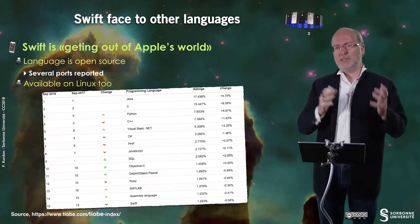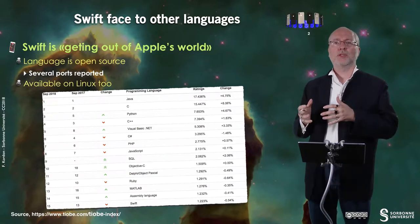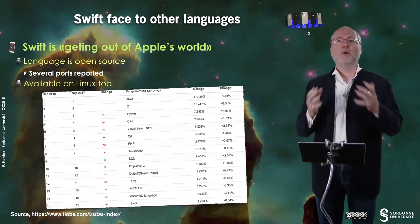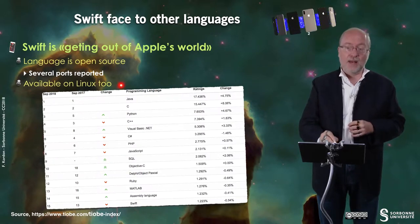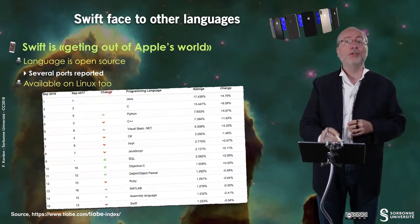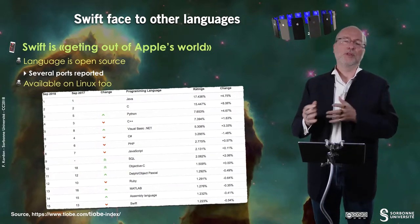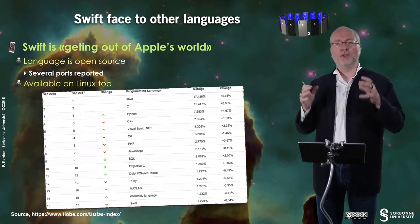But now since the language is open source, several ports have been reported, and at least it's available on Linux. There is a distribution for Ubuntu that is available, and some actors like IBM and other big companies are reporting to use Swift.